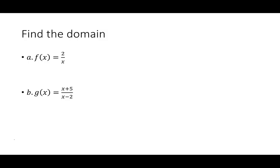I'll start with finding the domain of f(x) = 2/x. Looking at the denominator, x cannot be equal to zero. Depending on your homework system, you might put in the restricted value, or express it as an interval: negative infinity to zero, union zero to infinity. I always like to show both ways.